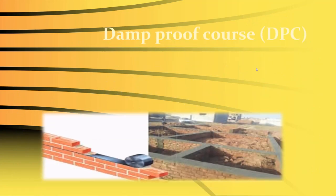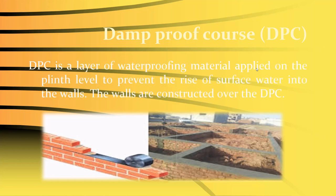The damp proof course (DPC) is a layer of waterproofing material applied at the plinth level to prevent the rise of surface water into the walls. Walls are constructed over the DPC. This layer prevents moisture from travelling up into the wall structure through capillary action.